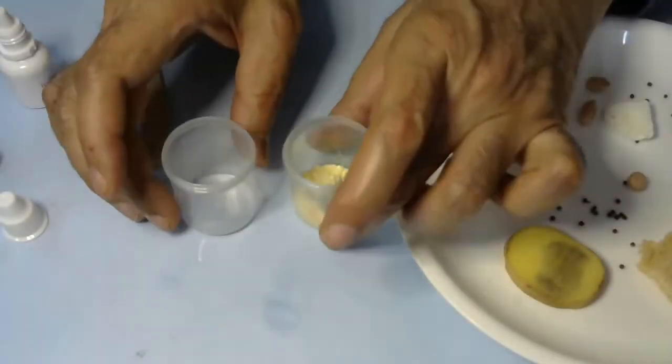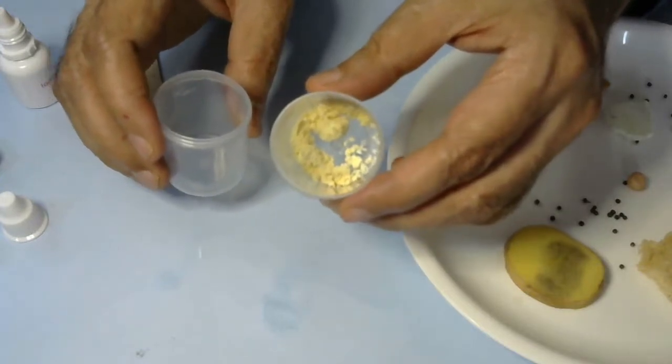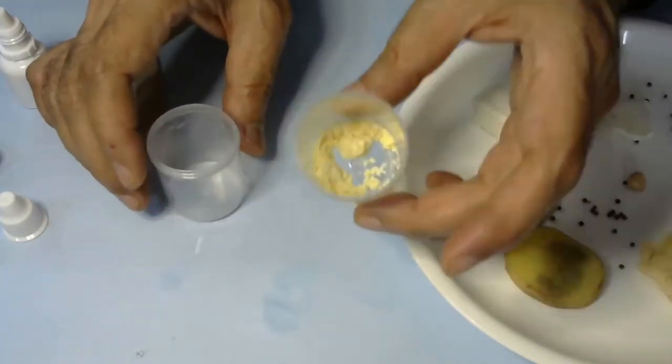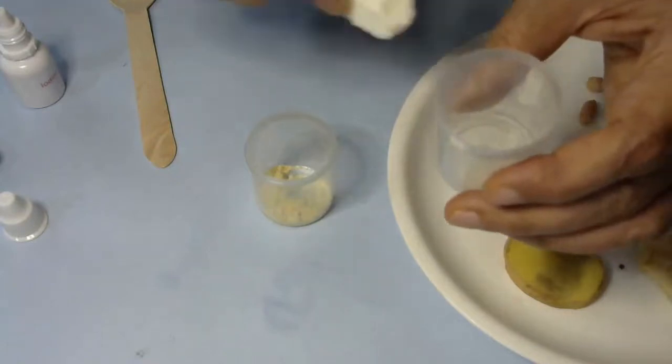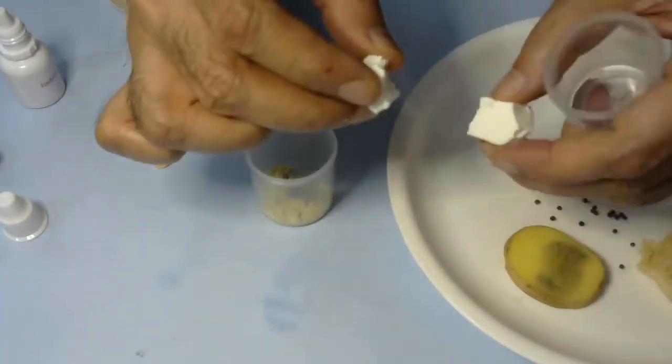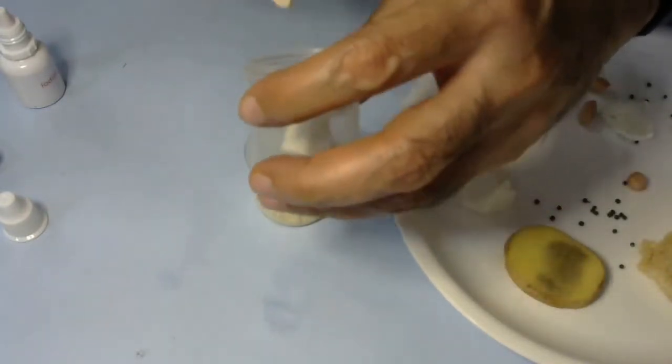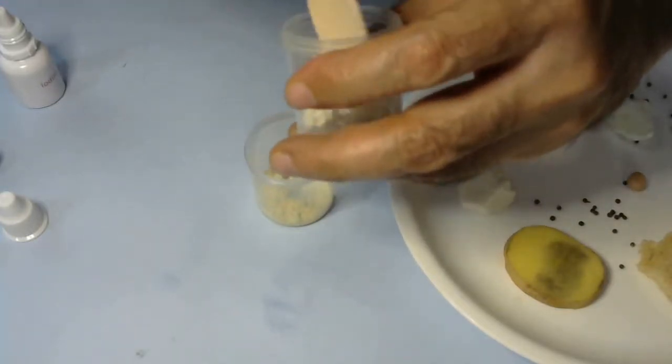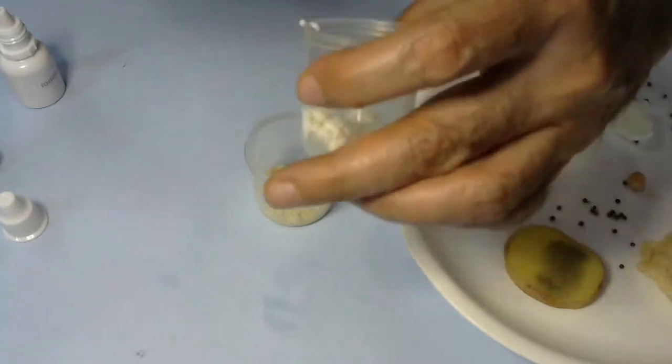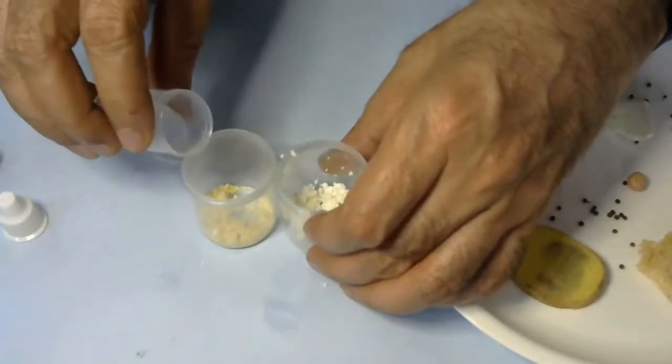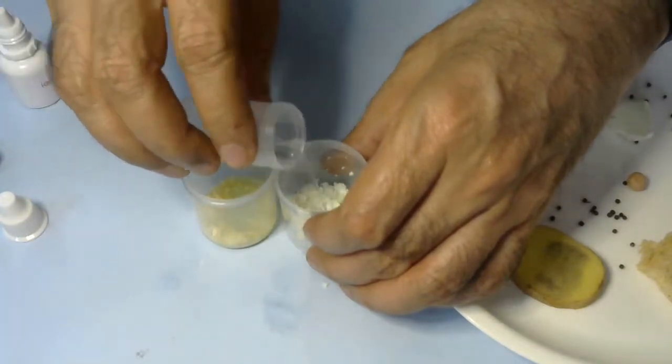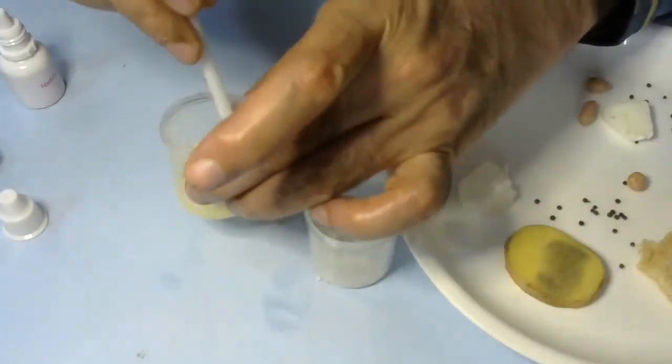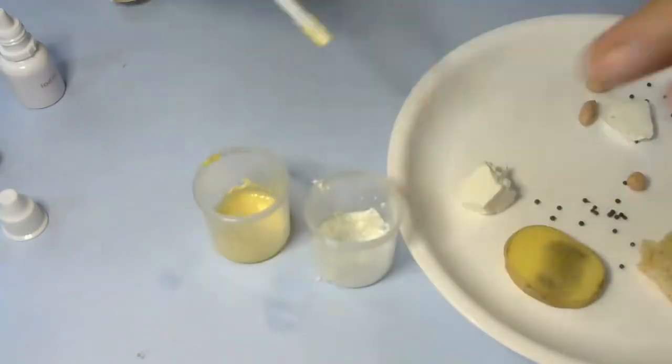Next, we'll do testing for proteins. For protein testing, in one container we've taken some besan. Besan is made from chana dal, and all pulses or dals contain protein. We're also going to test paneer because it also contains protein. We'll take a small piece, put it in the container, mash it with a spoon, then add water to mix it well. In both samples, we'll add water and mix well with the stirrer.